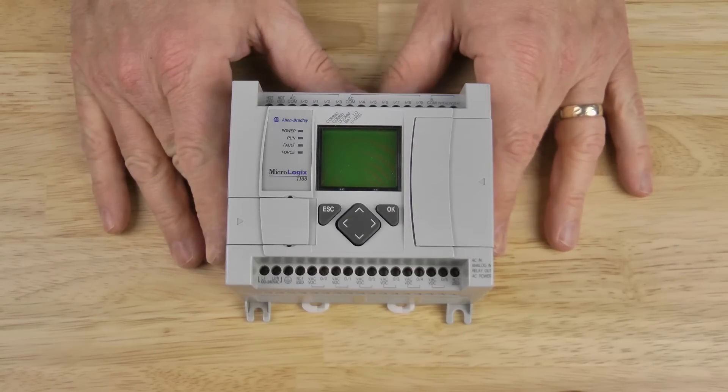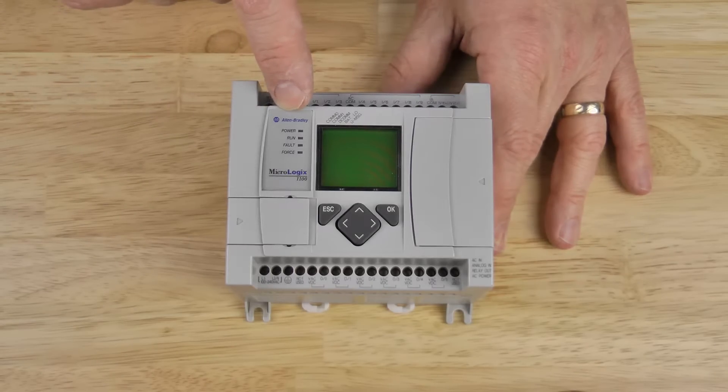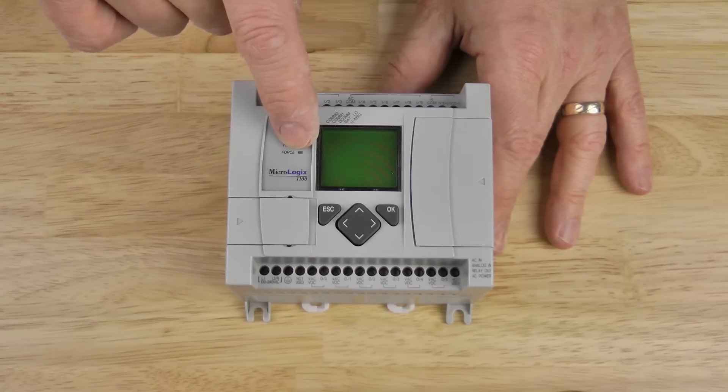Here we have one. Let's start by looking at the front of the unit. You can see the Allen Bradley logo, and underneath that we have the Power, Run, Fault, and Force indicators.